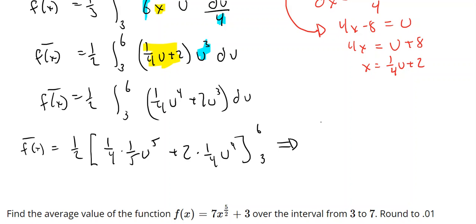That then you're going to get 1 20th times 1 half times 1 half is 1 40th u to the fifth. And then 2 over 4 here is 1 half times 1 half is 1 fourth u to the fourth.